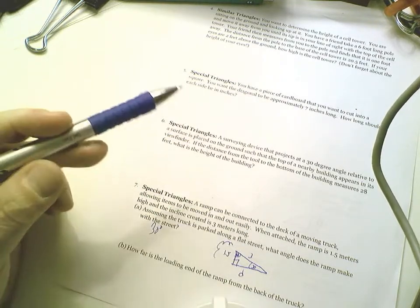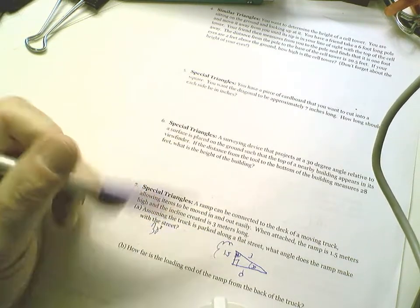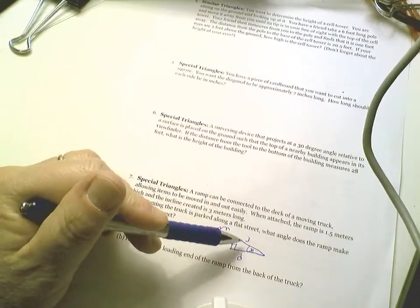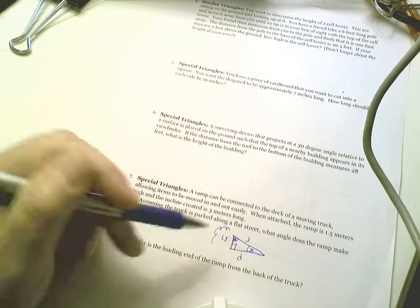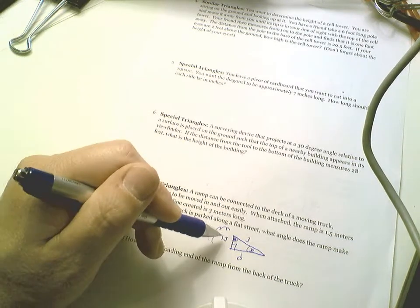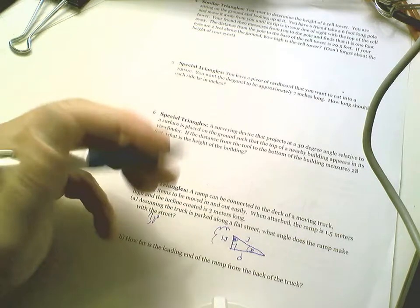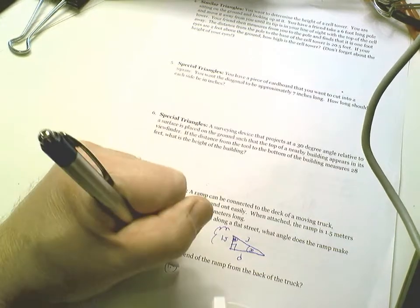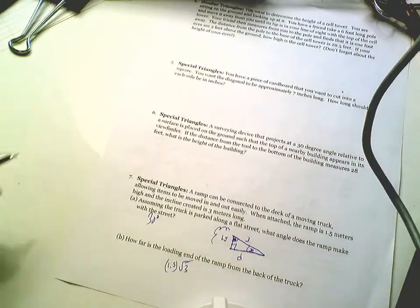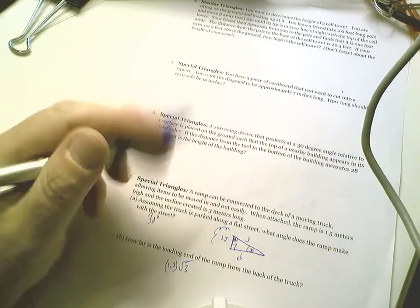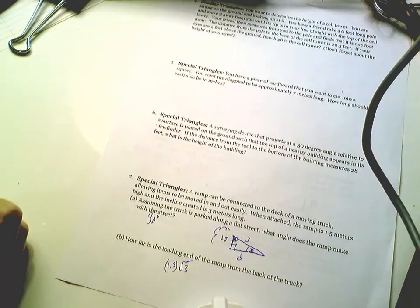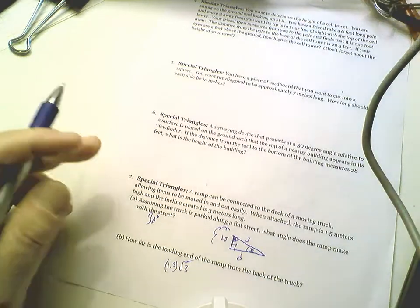What angle does the ramp make with the street? The angle is 30 degrees. How far is the loading end of the ramp from the back of the truck? We're being asked, how long is this distance? I'm going to use the letter D. It's the side opposite the 60 degree angle. If I know the 30 degree side multiplied by the square root of 3, that's a perfect exact answer. 1.5 times the square root of 3.